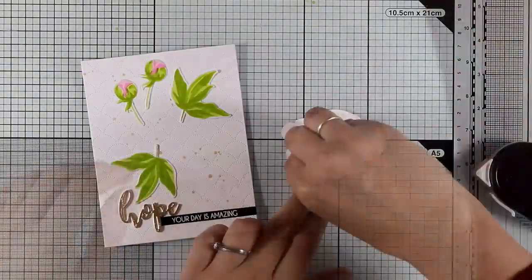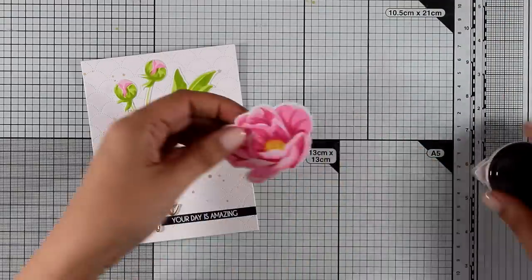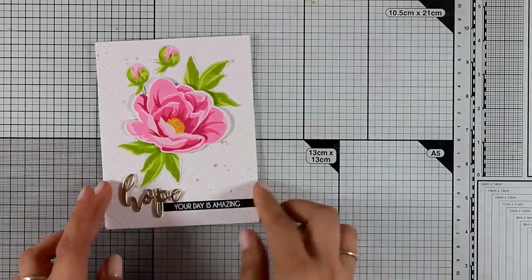And finally I'm going to pop up my flower by using some foam squares at the back. And I'm going to stick this panel on top of a standard card that's four and a quarter by five and a half.